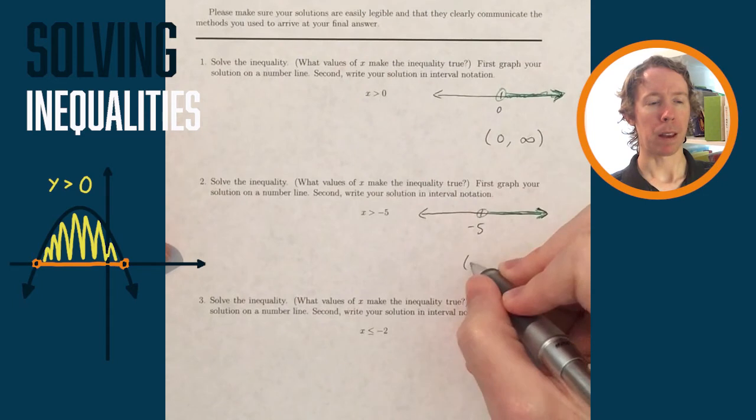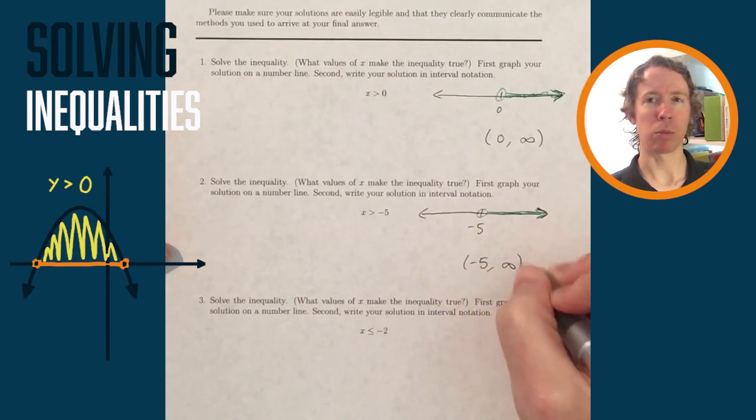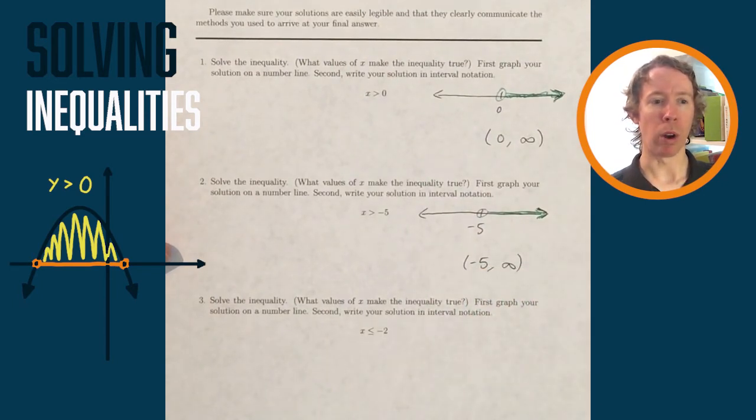But the interval notation looks the same as well: we're starting at negative 5, we're not including it, so I have an open parentheses as opposed to a closed bracket, comma infinity.